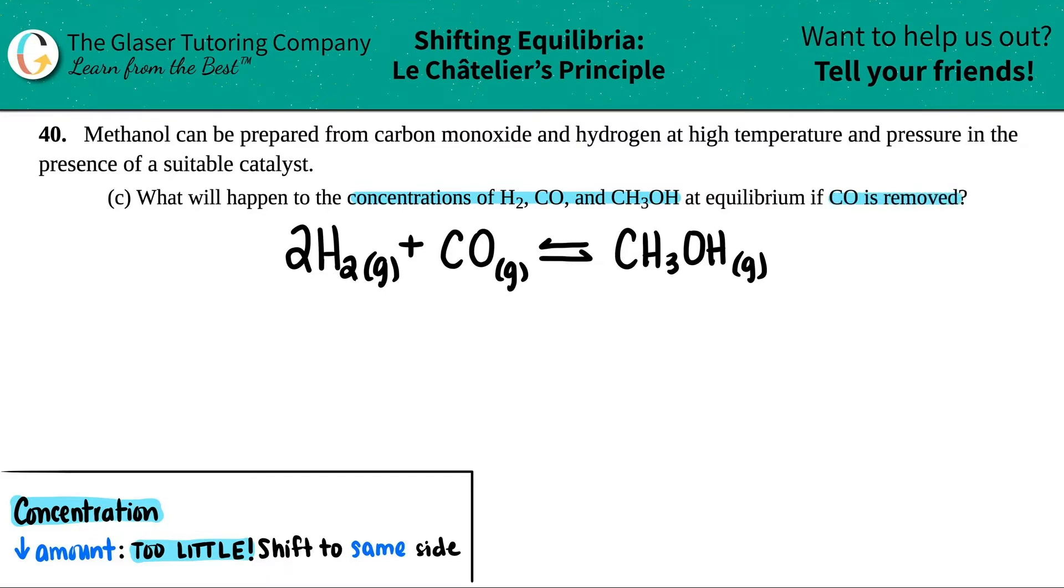Okay, so Le Chatelier's principle again. I just wrote out the balanced equation again because we're going to need it. And they're asking for what's going to happen to these concentrations. Are they going to increase, decrease, or remain the same when you remove carbon monoxide?